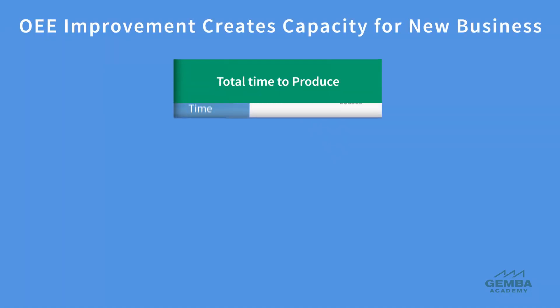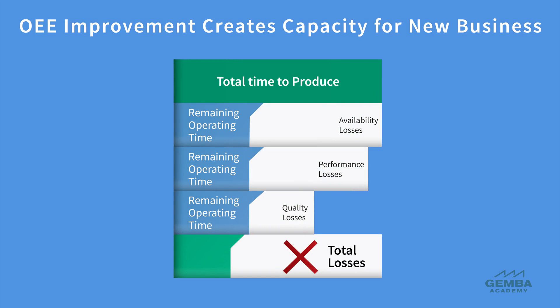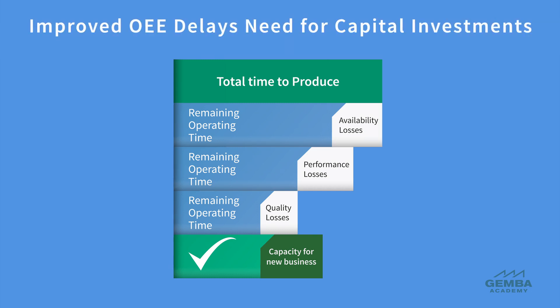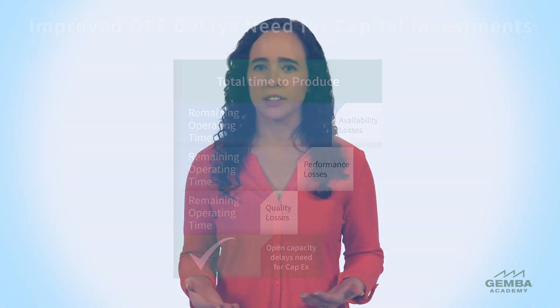As we reduce various equipment losses and improve our overall equipment effectiveness, this creates additional capacity. The added capacity gives an organization the opportunity to capture new business and produce and deliver more goods, enabling the organization to increase revenue with the same asset base. In addition, it's common for TPM to reduce or delay the need for capital expenditure. When a production line running at 40% OEE needs to double production, TPM provides an alternative to investing in a new production line.